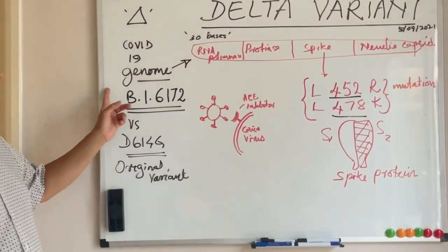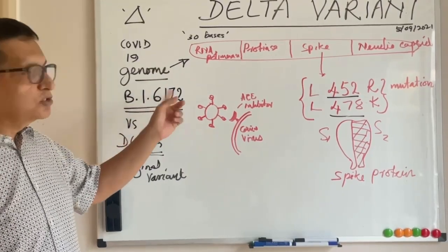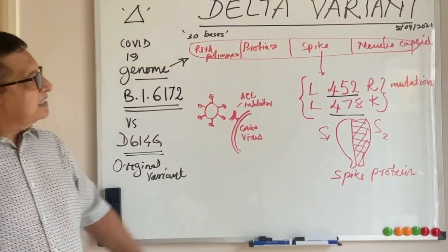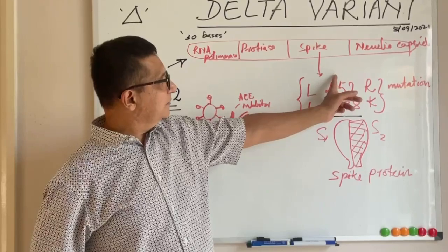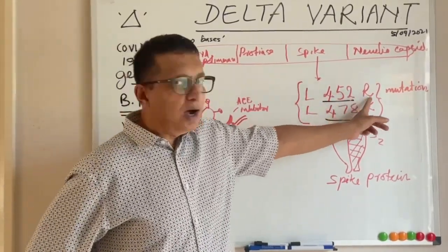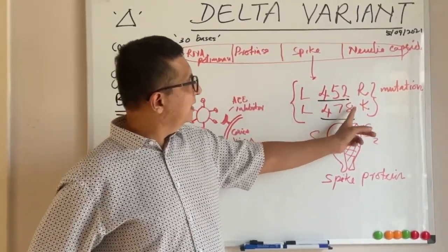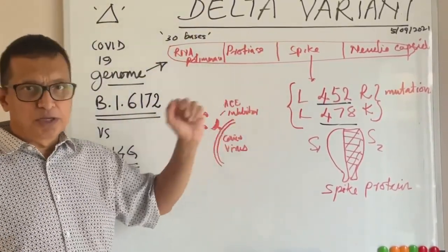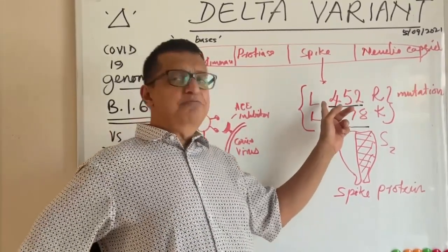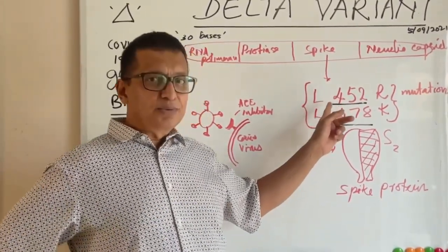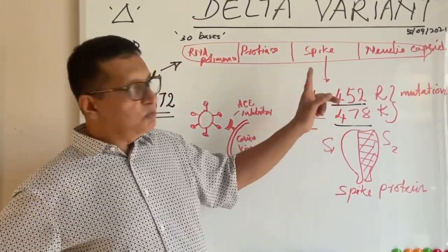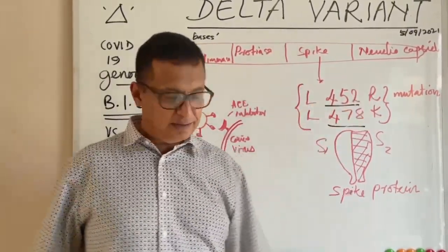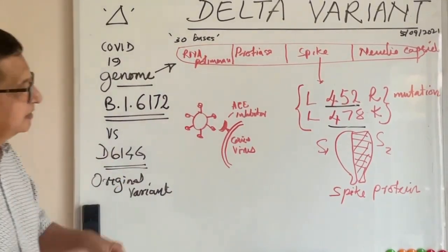The original delta variant, known as B.1.617.2, was first found in India. It has mutations in the spike protein called L452R and L478K. Note: in a previous lecture I incorrectly said L542R — the correct mutation is L452R.